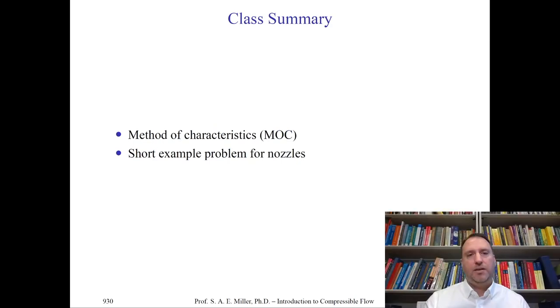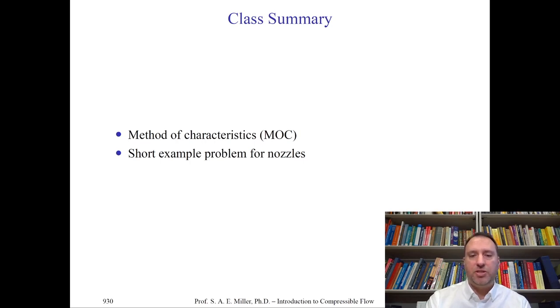Let's summarize our findings today. We talked about the method of characteristics, its derivation, and practical applications within a supersonic flow, including what happens at the wall. We showed that we can choose the wall boundary condition in terms of flow deflection to cancel out reflected waves and find beautiful isentropic nozzles. This can also be applied to inlets or any other region where you want supersonic isentropic flow. Thank you very much for your time today.